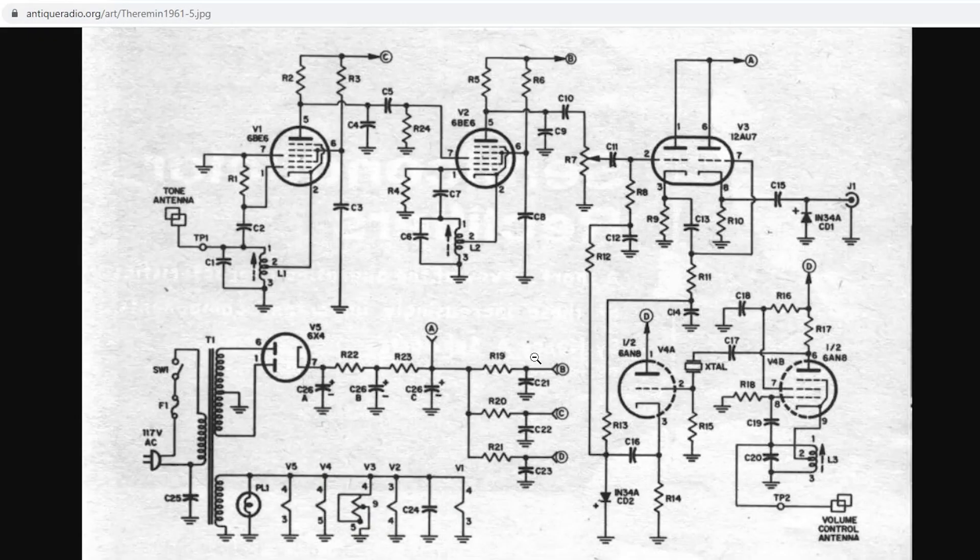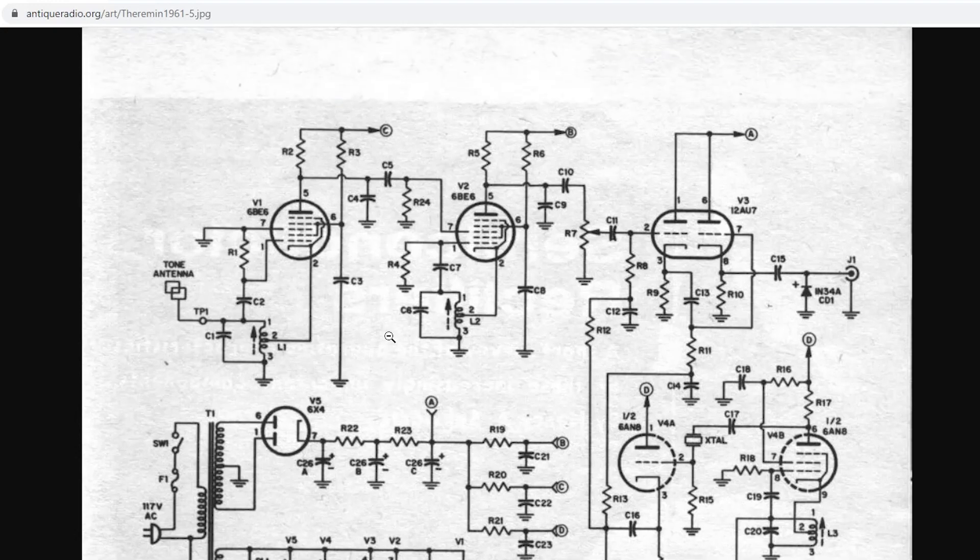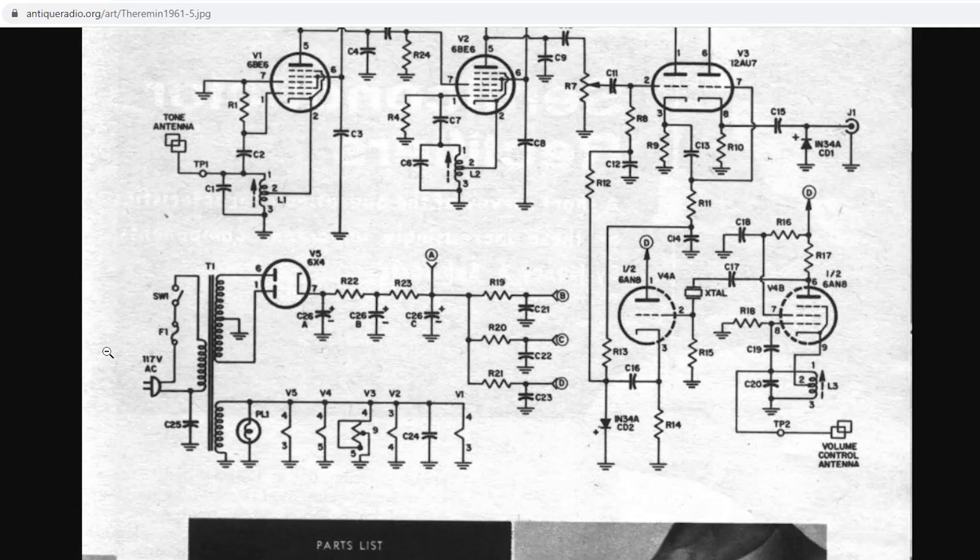This is the circuit for my theremin. This actually comes from a 1961 electronics magazine. So first of all, we have the AC voltage. It comes into the primary coil of the mains transformer. Now one of my modifications was adding an AC line filter between here and here. We also have a switch that goes to the primary coil.